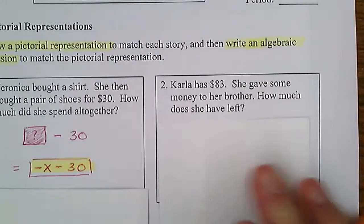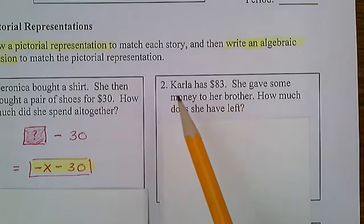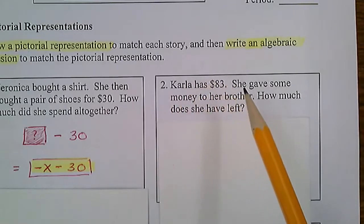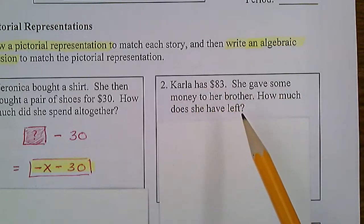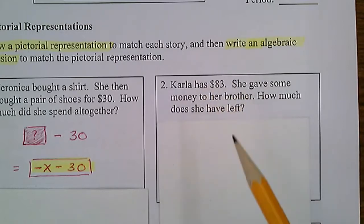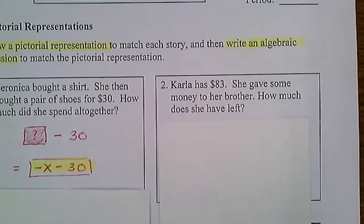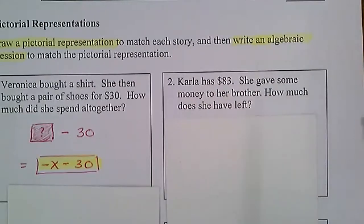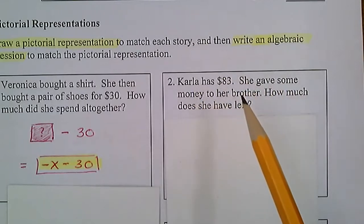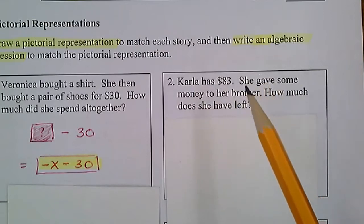Number two, you are going to do on your own. I'll read it with you: Carla has $83 — so we know how much she's starting with. She gave some money to her brother. How much does she have left? You're going to need to do a pictorial representation and then an algebraic expression. She's starting with 83, and she gave some money to her brother — so think: is she adding, subtracting, multiplying, or dividing?